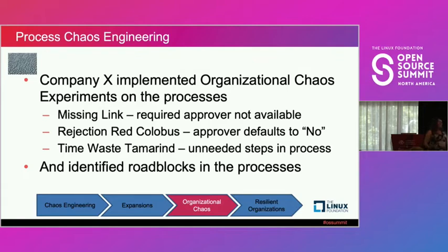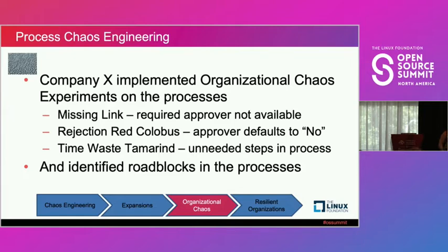Rejection Red Colobus — everybody has a bad day sometimes, and sometimes they're just in the mood to say no. Usually when that happens they're not picky about what they're saying no to. That can be very destructive if the approver is actively saying no to something that really needs to be a yes. How do you identify that's what's happening? What steps are available to escalate beyond that approver? Does the team know who to reach out to?